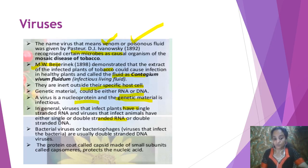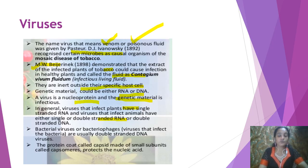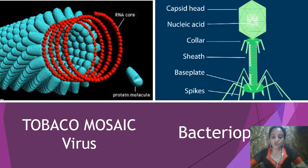The virus that attacks a bacterium is called a bacteriophage, and the bacteriophage finds wide applications in the field of biotechnology. The bacteriophage usually has a double-stranded DNA. The protein covering of the virus is called the capsid, and the capsid is made up of individual units called capsomers. So the word meaning of virus is poisonous fluid — venom — and they have a proteinaceous coat called the capsid, made up of individual units called capsomers.